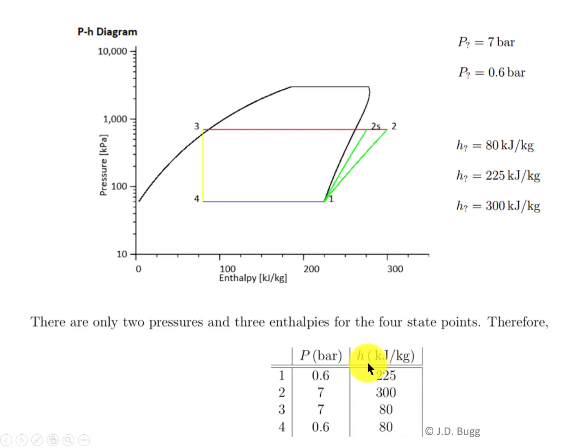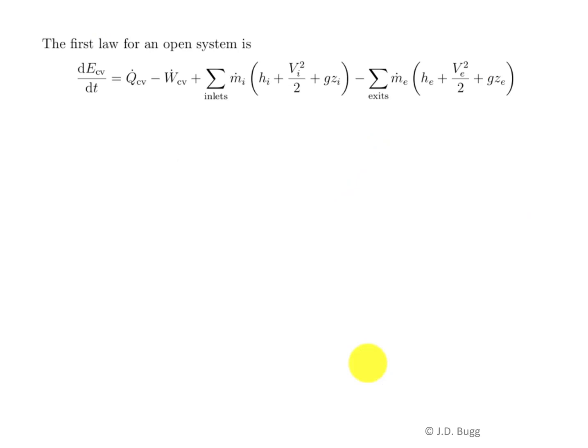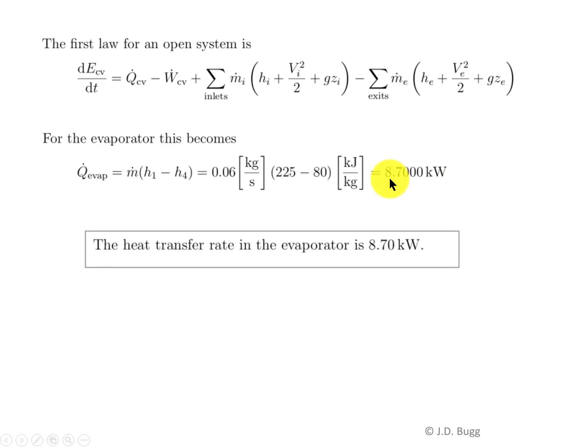Now that we know the enthalpies at all of the state points, we can go ahead and consider the energy equation to figure out the heat and work transfers that we're after. First of all, the first law for an open system, we write the general complete equation. We have steady state, and we have kinetic and potential energy ignored. So when we apply this to the evaporator, of course, there's also no work. So q dot in the evaporator is m dot h1 minus h4. That's our mass flow rate times the change in enthalpy. And again, we figured out which one was h1 and which one was h4 by looking at the pH diagram. And that works out to a refrigeration capacity of 8.7 kilowatts.